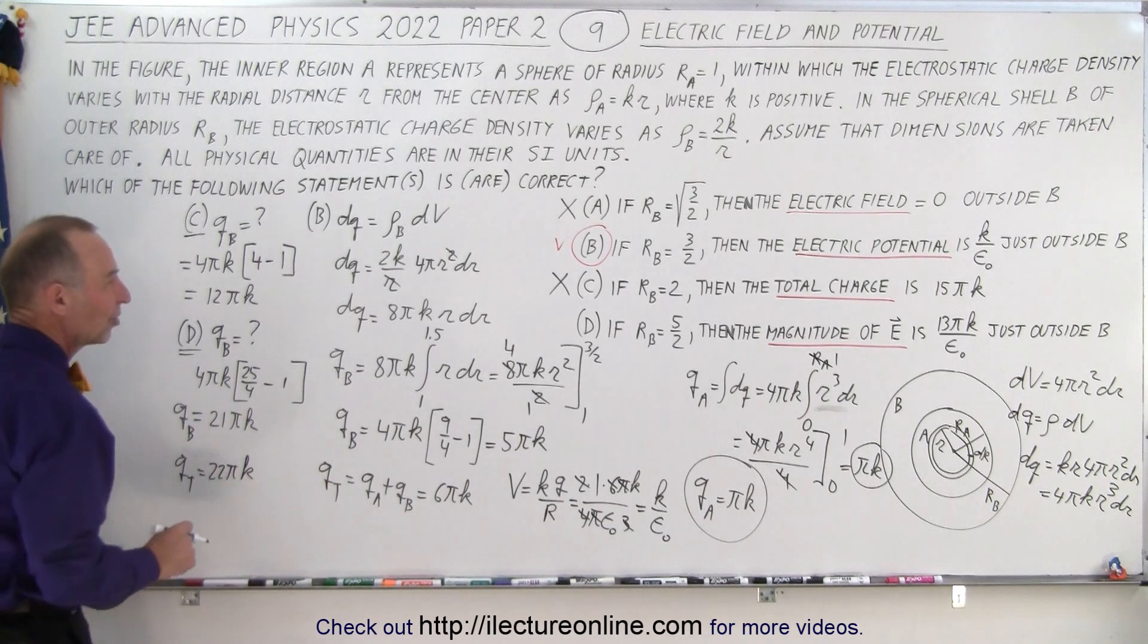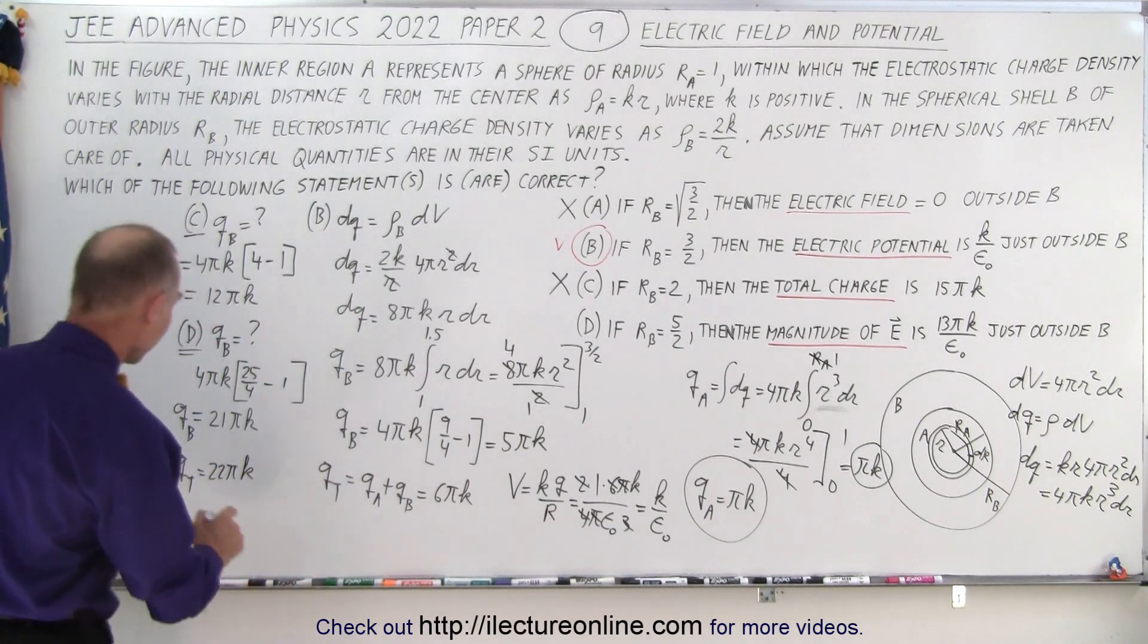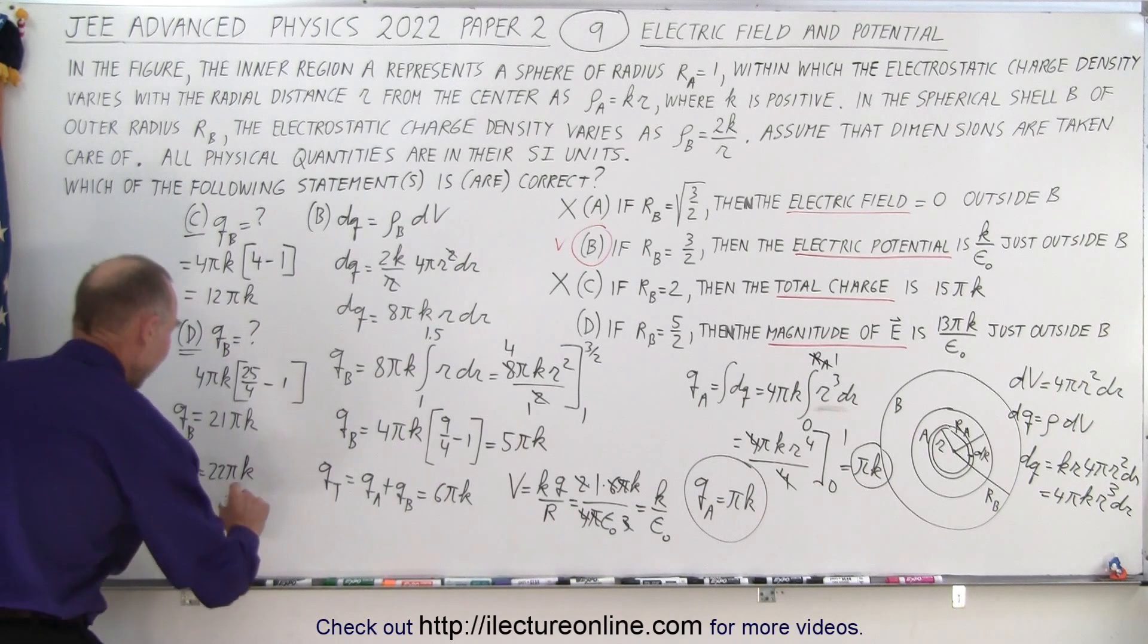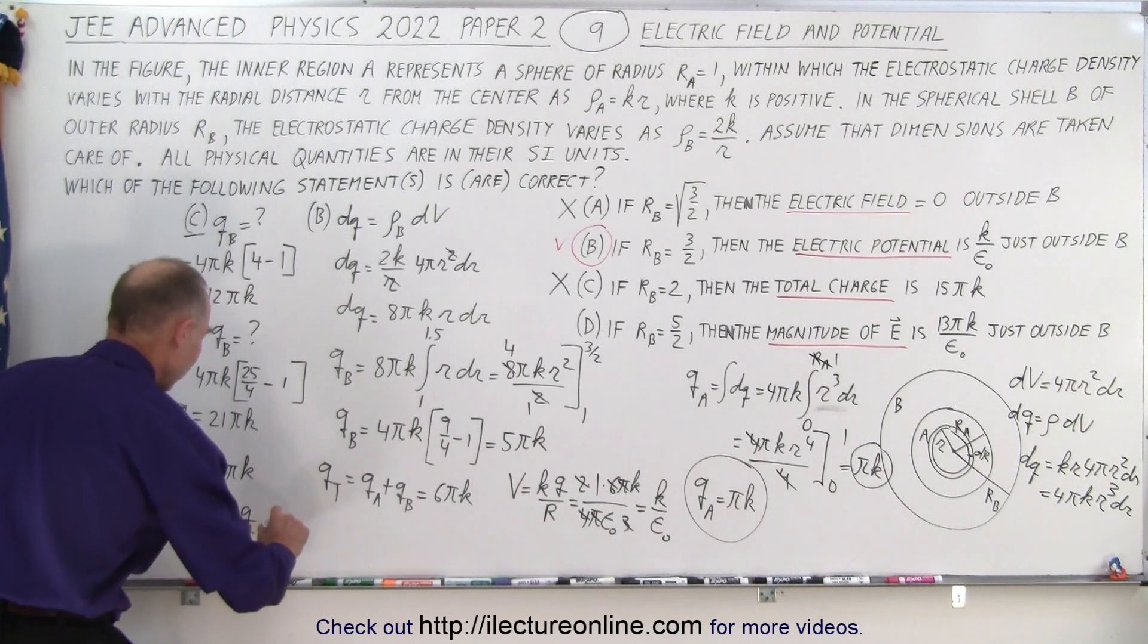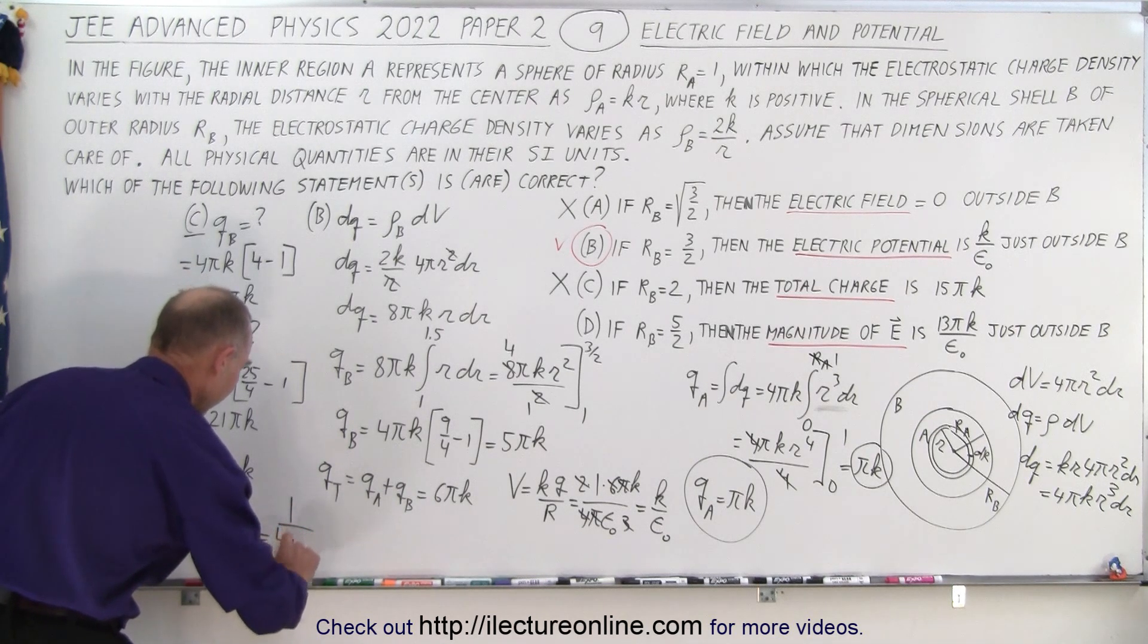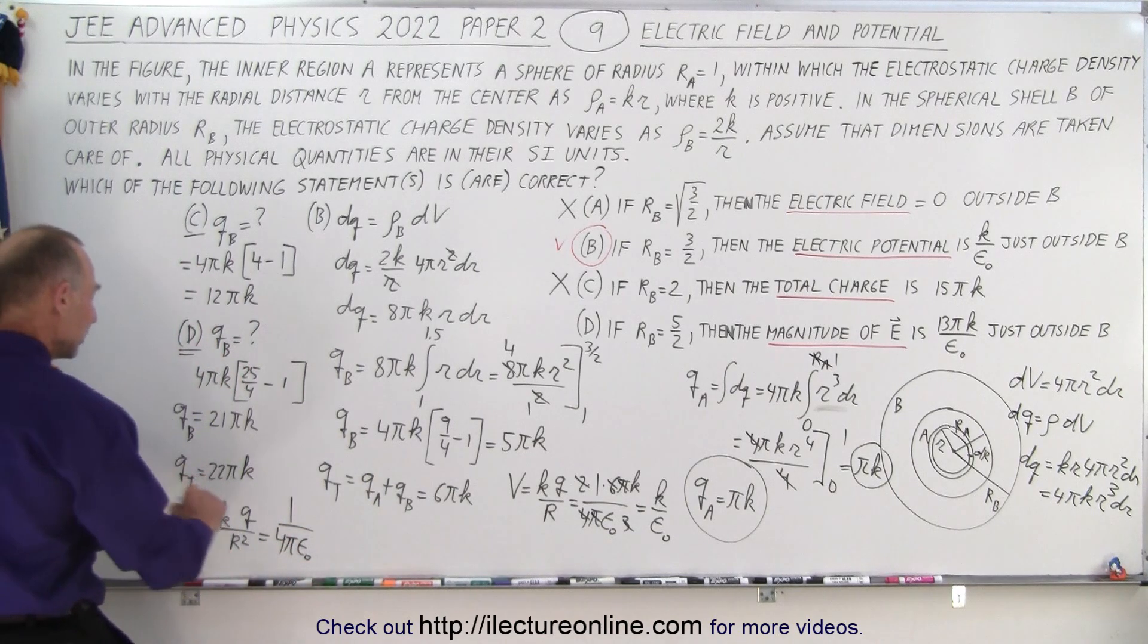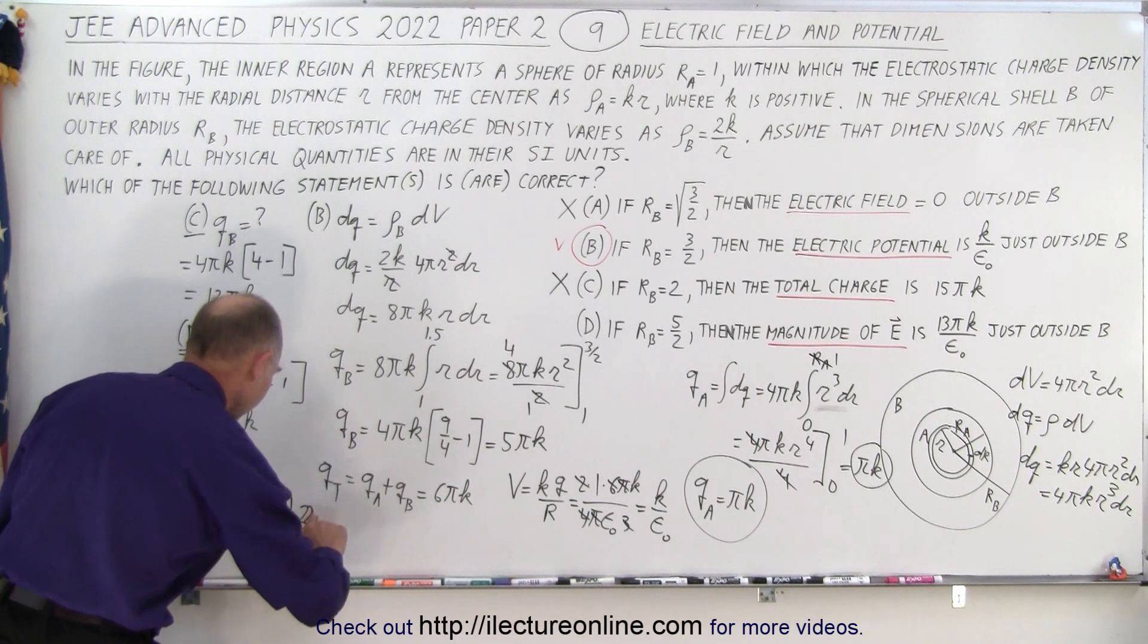Now, what is the electric field right outside the sphere? The equation of the electric field, the magnitude, is equal to k times the charge, divided by the distance squared. Alright, so in this case, k would be 1 over 4 pi epsilon sub-naut.